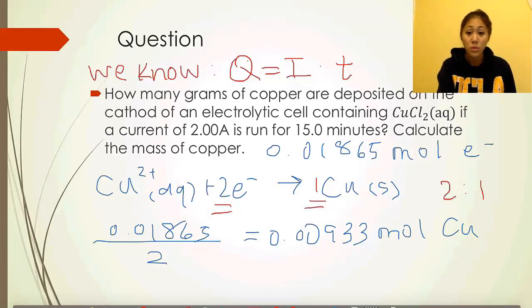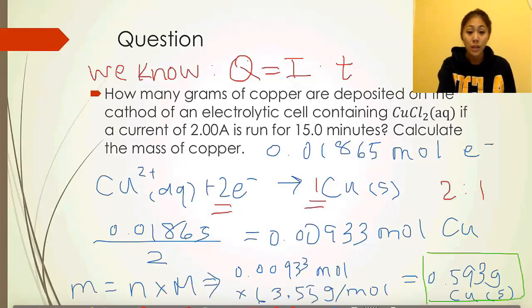This gives us the moles of copper solids. From the moles of copper solids, it's easy to find the grams of copper deposited. In order to calculate the mass, we multiply the moles by the molar mass of copper, which is 63.55 grams per mole. With that, we're able to calculate that 0.593 grams will be deposited on the cathode of this electrolytic cell.